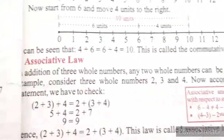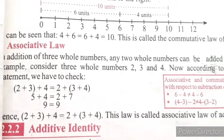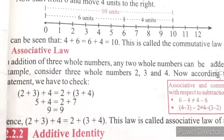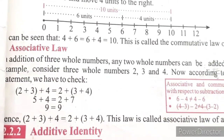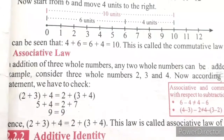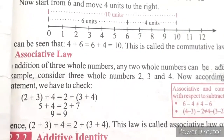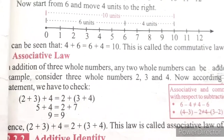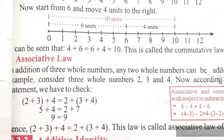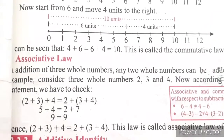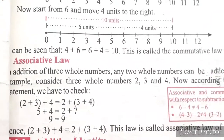Now come to the next law, which is associative law. Associative law deals with the addition of three whole numbers. Commutative law involves two whole numbers. Now in associative law, how many whole numbers are there? Three whole numbers.